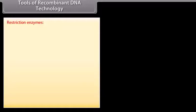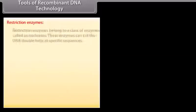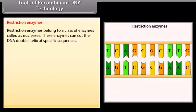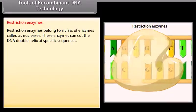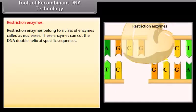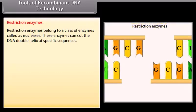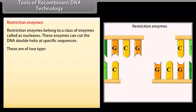Tools of recombinant DNA technology. Restriction enzymes. Restriction enzymes belong to a class of enzymes called as nucleases. These enzymes can cut the DNA double helix at specific sequences. These are of two types.